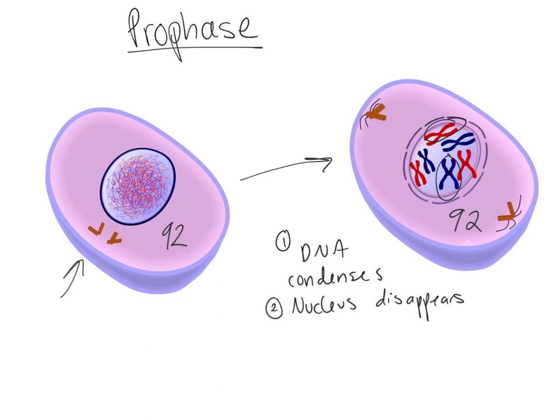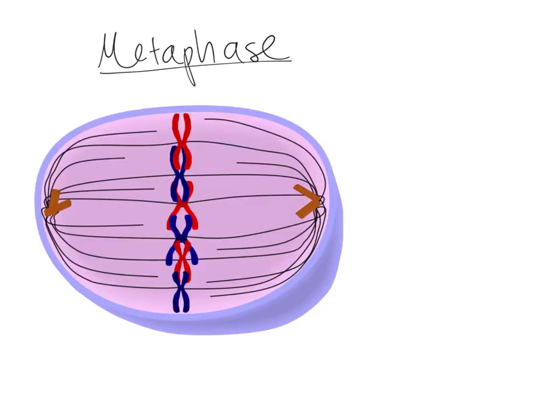The cell will divide into two cells that each have 46 chromosomes. The next step is metaphase. In metaphase, the sister chromatids line up in the middle of the cell — that's all that happens. Each X, being one sister chromatid or two chromosomes stuck together, just lines up in the center of the cell.